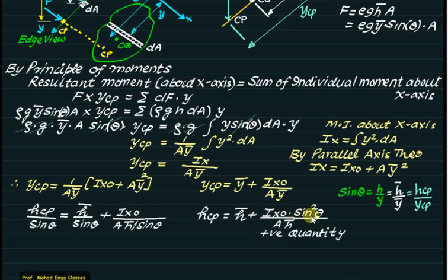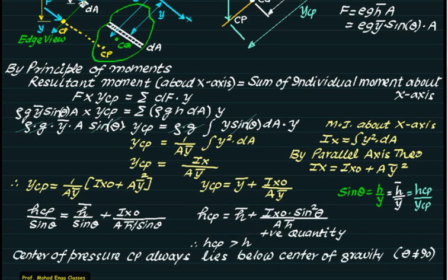In the equation s_cp = h-bar + (Ix0 × sin²(theta)) / (A × h-bar), the second term is always positive: sin²(theta) is positive, area A is positive, h-bar is positive, and Ix0 (being the sum of squared distances times area) is always positive. Therefore, s_cp is always greater than h-bar, which means the center of pressure always lies below the center of gravity — except when theta equals zero (horizontal plate), in which case the second term vanishes.